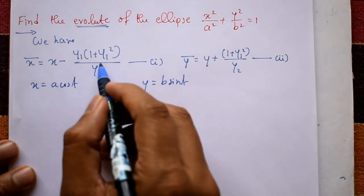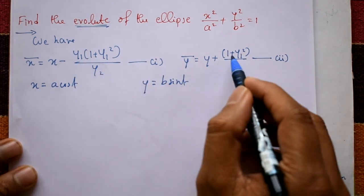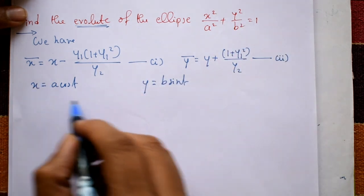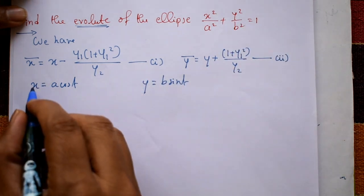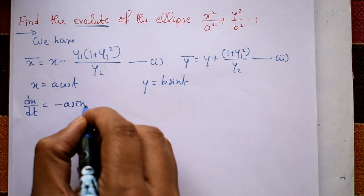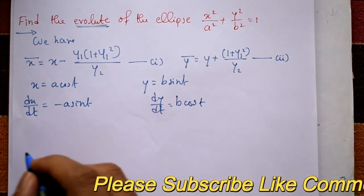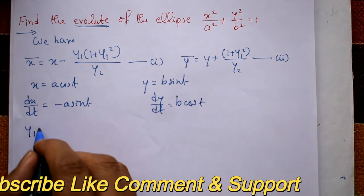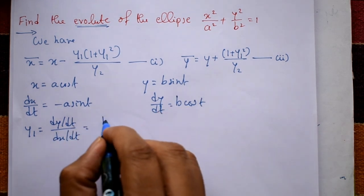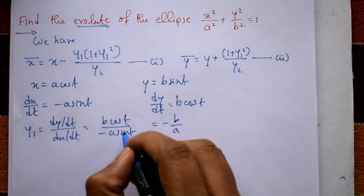From equations 1 and 2 we need y1 and y2. Using the parametric form, differentiate x with respect to t: dx/dt equals minus a·sin(t). Differentiate y with respect to t: dy/dt equals b·cos(t). Now y1 equals dy/dt divided by dx/dt, which is b·cos(t) divided by minus a·sin(t).